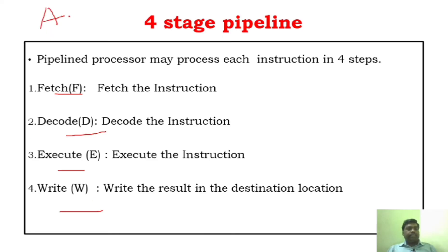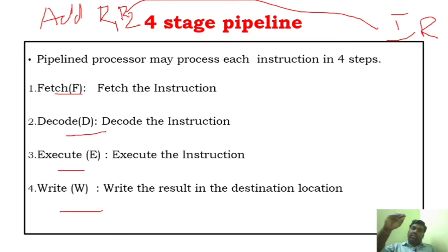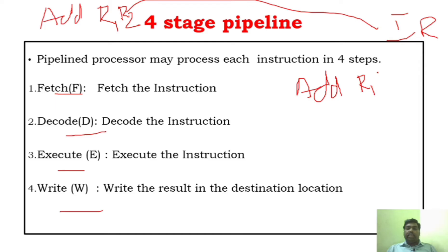For example, if you take this particular instruction — ADD R1, R2 — in order to execute it, it has to fetch this instruction from the memory. It has to fetch the instruction to the IR (instruction register). Only if the instruction reaches the IR will the fetch phase be over. During the fetch phase, it will read and fetch the instruction from the memory. That is called the fetch phase.